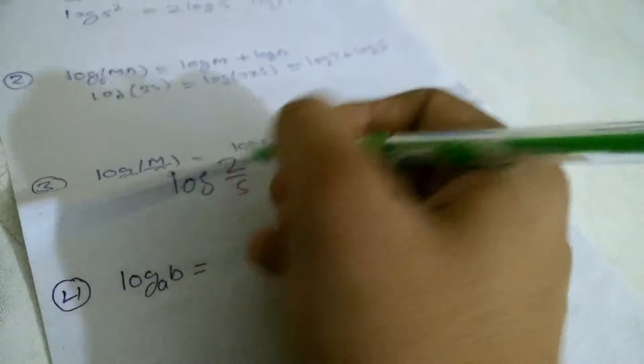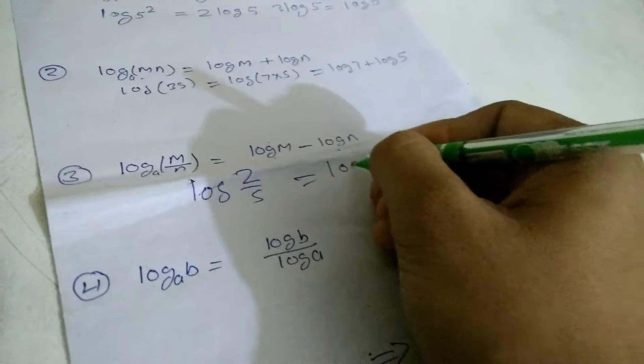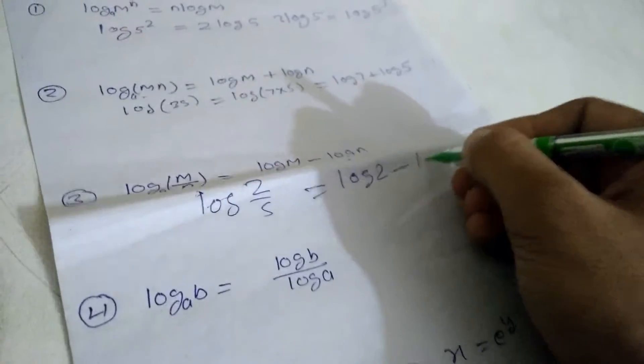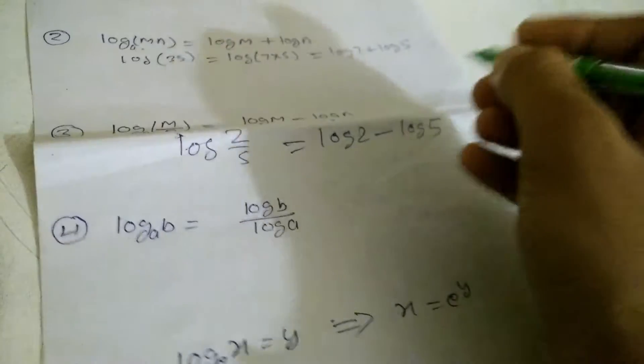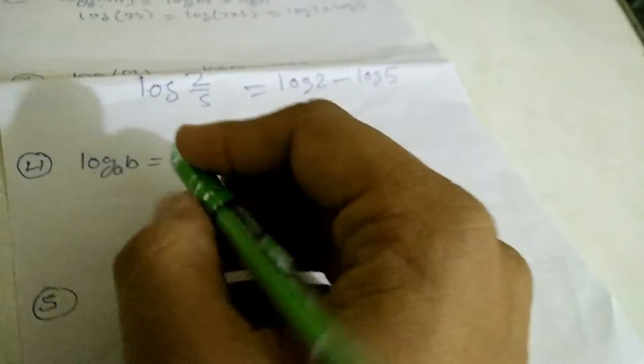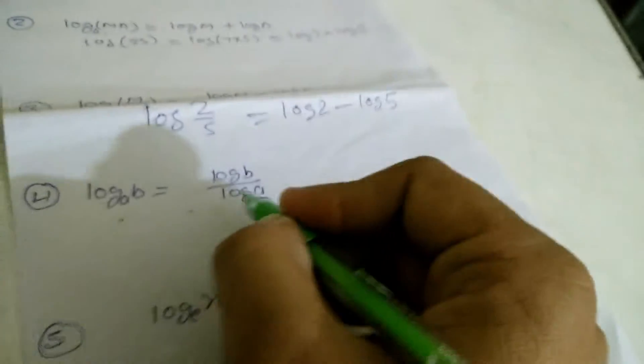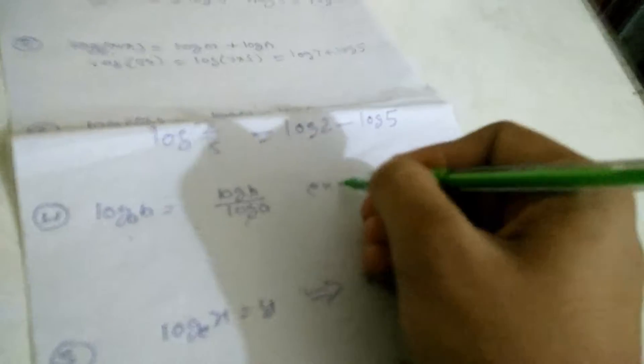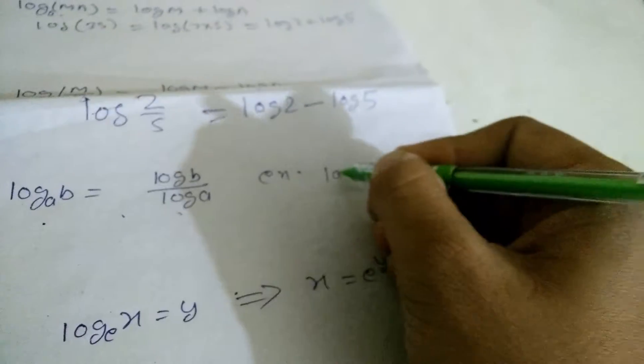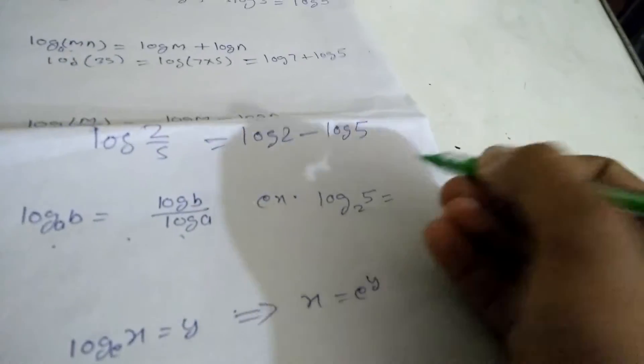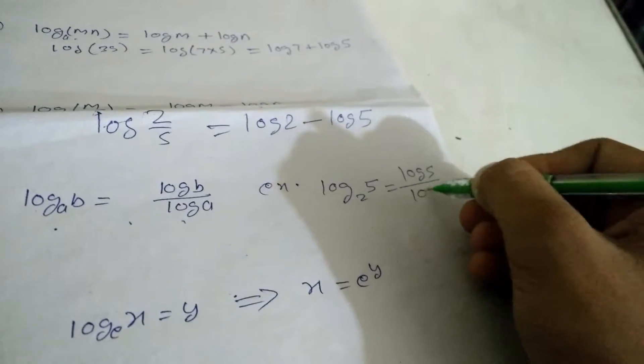This property is very important, which is base changing property. If we have example like log 2 or log of 5 or log of 2, this time our base will become same.